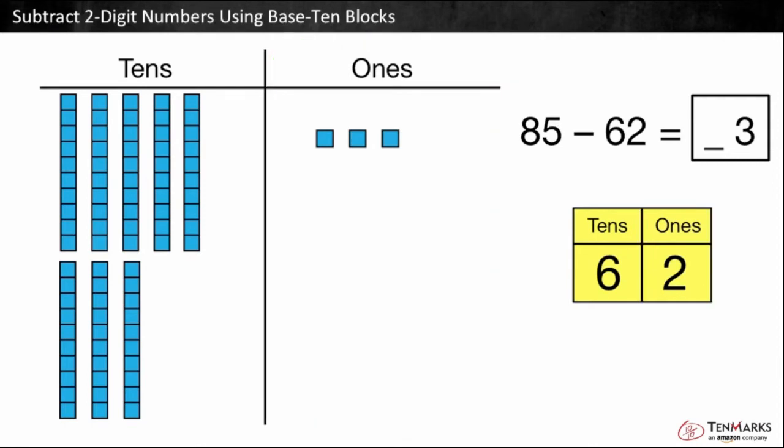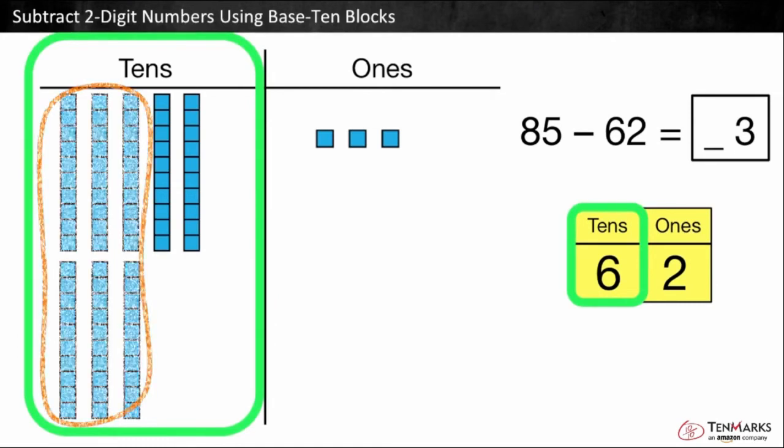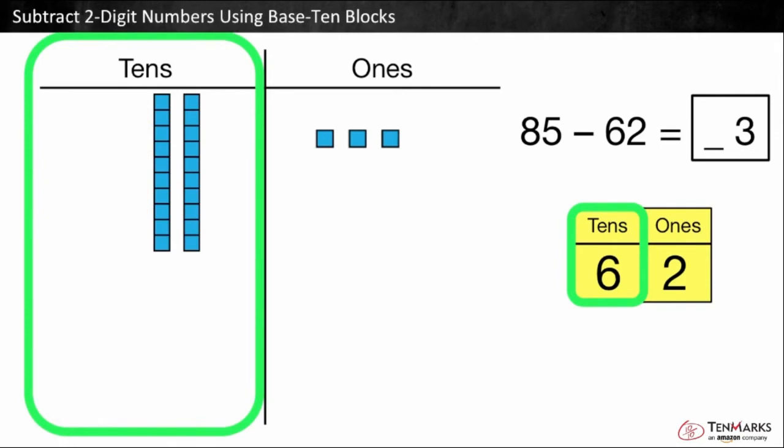Now we subtract the tens. Can we take six tens away from eight tens? Yes. Eight minus six is equal to two. We have two tens left. What is the difference? There are two tens and three ones left. 85 minus 62 is equal to 23.